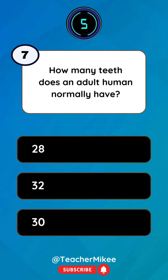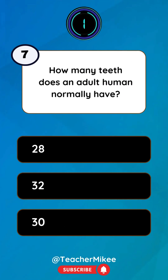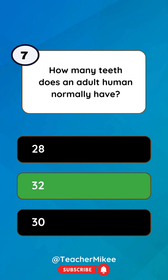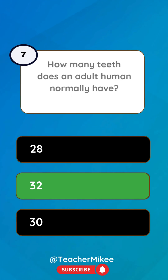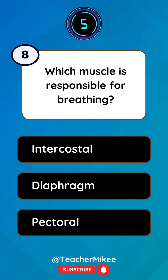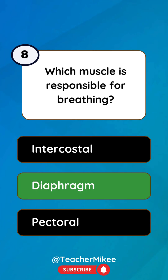How many teeth does an adult human normally have? 32. Which muscle is responsible for breathing? Diaphragm.